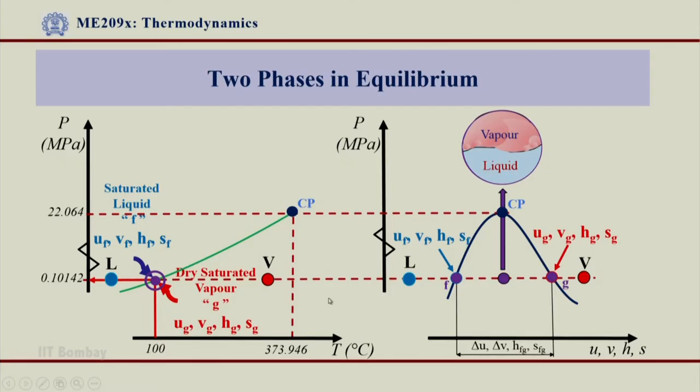The third condition also can be seen when you are on the LV line, when we are on the saturated liquid or saturated vapor. We know that if I see in PV diagram, saturated liquid would be given by UF, VF, HF, and SF property that you see from the steam table, and saturated vapor condition will be given as UG, VG, HG, and SG.